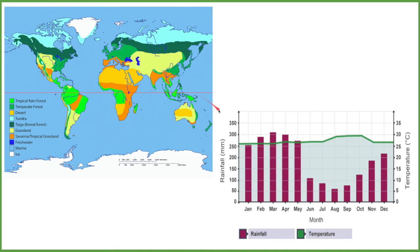If we look at the climate graph, the purple bars represent the amount of rainfall and the green line represents the temperature. The temperature remains fairly consistent through the year. There is a slight increase around the northern hemisphere going into autumn, which corresponds with a decrease in rainfall along that period. However, the amount of rainfall even in this period is still a lot more than other biomes would receive.